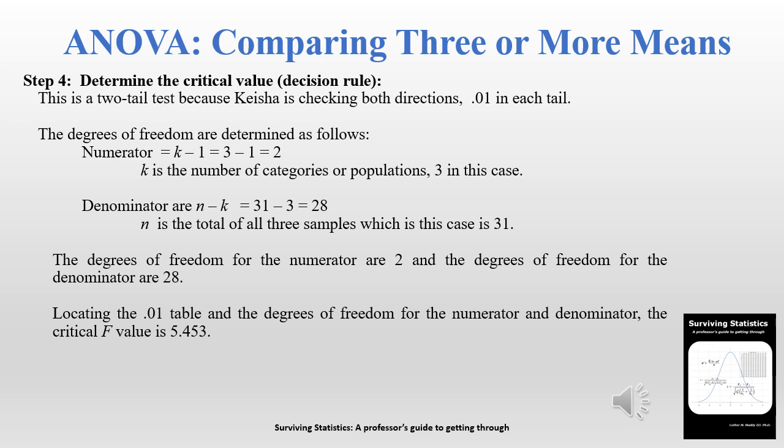Step four is to determine the critical value. This is a two-tail test, so Keisha is looking for 0.01 in each tail, using the F distribution at the 0.01 level of significance. The degrees of freedom are determined differently here: the numerator is K minus 1, where K is the number of categories — three in this case — giving a numerator of 2. The denominator is N minus K: 31 total individuals minus 3 categories equals 28. We'll use the table to look up the critical value for numerator 2, denominator 28 at the 0.01 level.